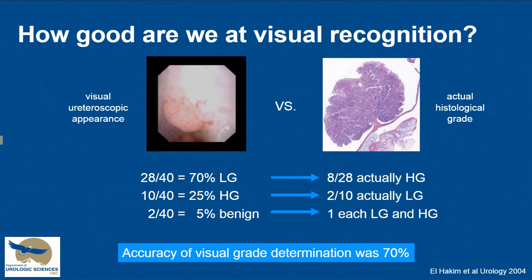If we don't do a biopsy but at least take a look, how good are we at visual recognition? In a series of 40 patients who ended up with a biopsy, the urologist thought it was low grade in 70%, but 8 out of those 28 were actually high grade. Urologists thought 10 were high grade and 2 of those 10 were actually low grade. Urologists thought 2 out of 40 were benign when both were actually cancer. Overall accuracy is about 70%, though it may not make a difference between high grade and low grade if a patient obviously needs surgery anyway.